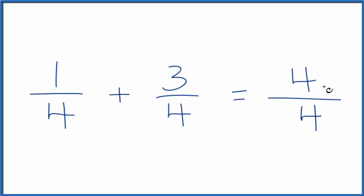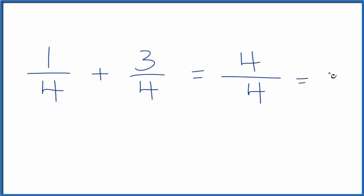You could simplify this further because these are the same. You could just write this as one over one or just as one. So one-fourth plus one-third, that equals one.